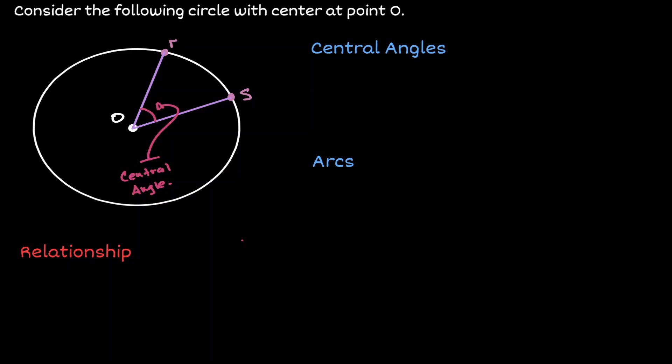So based on this illustration, we can say that a central angle is an angle that is created when the center of the circle is connected to two points in the circumference of the circle.